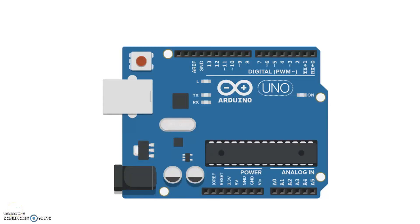In this video we will talk about the analog write property in the Arduino. Here's the Arduino — on the top we have digital pins, and here we have the analog pins and the power port. In the last couple of examples we've used analog pins to read analog values and saw the analog read as well as the analog reference function. Now let's talk about analog write.